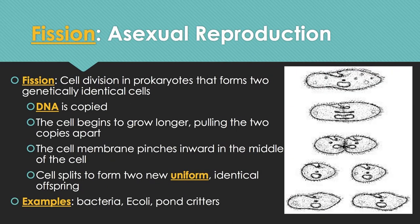There are different types of asexual reproduction. The first is fission, also known as binary fission — cell division in prokaryotes and some single-celled eukaryotes that forms two genetically identical cells. The DNA is copied, the cell grows longer pulling the two copies apart, the cell membrane pinches inward in the middle, and the cell splits into two uniform identical offspring. Examples include bacteria, E. coli, and pond critters such as the paramecium and the amoeba.